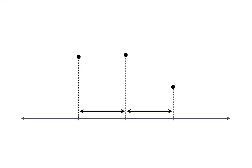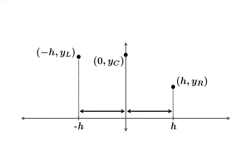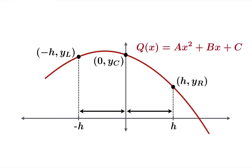To derive this rule, it turns out there's no loss of generality in assuming the center point occurs at the origin. So we're going to shift our whole picture so that the center is the origin. That means the x-coordinate of the right-hand endpoint is h, and the x-coordinate of the left-hand endpoint is negative h by symmetry. The coordinates of the three chosen points are therefore: (−h, yl), (0, yc), and (h, yr). And we're looking for some quadratic polynomial q with formula ax squared plus bx plus c.